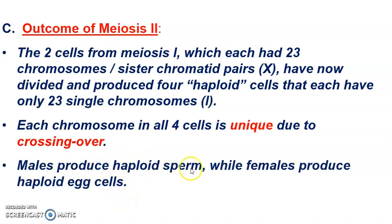Males are producing sperm, while females are producing haploid egg cells — or the fancy word for an egg cell is an ovum, O-V-U-M.